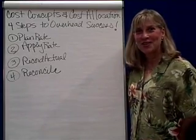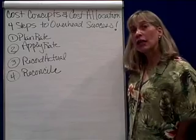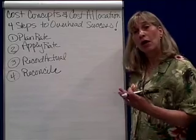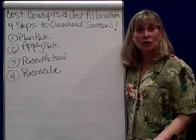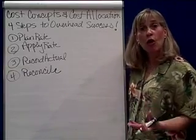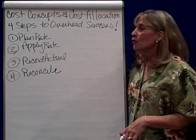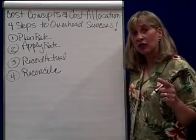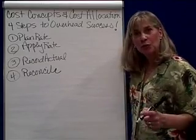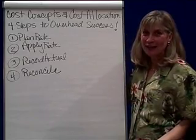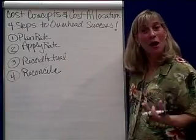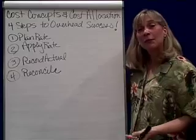Cost concepts and cost allocation in managerial accounting. Under normal costing, our overhead account has a debit side, which is actual overhead, and a credit side, which is applied overhead. At the end of the period, we reconcile the over or under applied overhead. Work in process has actual materials, actual labor, and applied overhead. Finished goods and cost of goods sold during the period also carry actual materials, actual labor, and applied overhead.